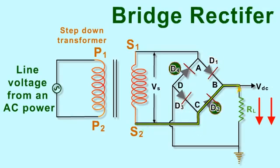the current flows along S2, C, B, D, A, S1 through RL.